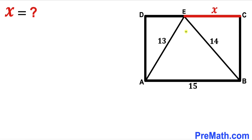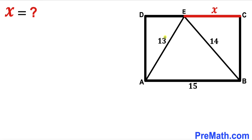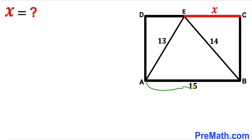Welcome to pre-math. In this video we have a scalene triangle ABE fully inscribed in a rectangle ABCD, such that the side lengths of this triangle ABE are 13, 14, and 15 units respectively. The segment EC is represented by X units, and the side length of triangle ABE is equal to the side length of rectangle ABCD. Our task is to find the value of length X.